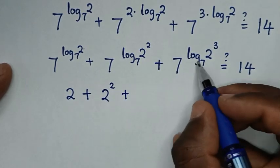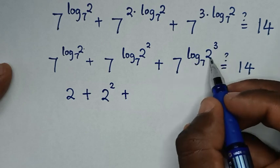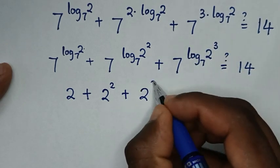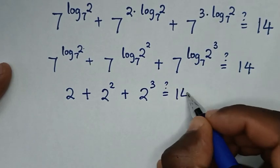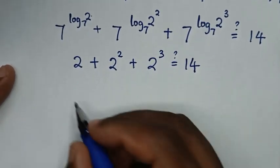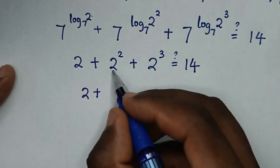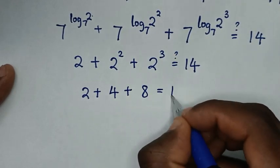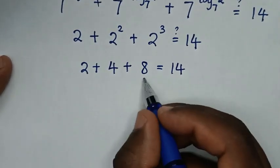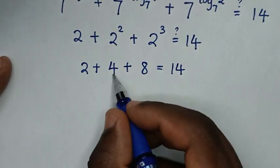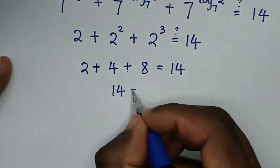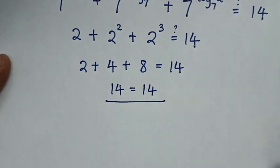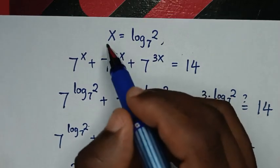Applying the identity a power log_a(b) = b: 7 power log 2 base 7 equals 2, 7 power log 2² base 7 equals 2 squared which is 4, and 7 power log 2³ base 7 equals 2 cubed which is 8. So we get 2 plus 4 plus 8 equals 14, and since 2 plus 4 is 6 and 6 plus 8 is 14, left side equals right side. The answer is verified and true.